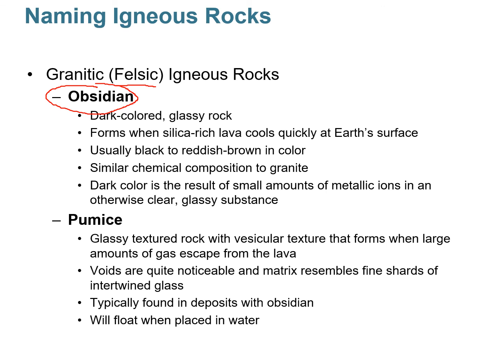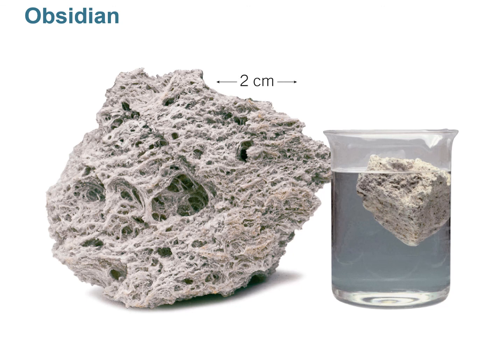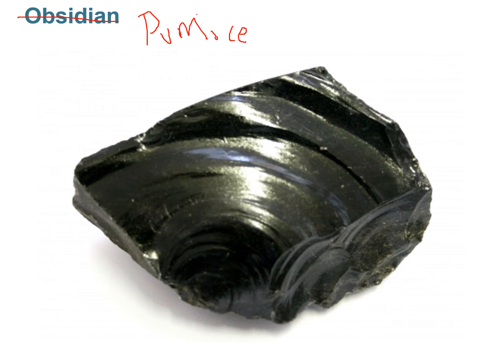Other felsic igneous rocks: obsidian, that glassy dark-colored rock, forms when silica-rich lavas cool quickly at the Earth's surface. Pumice is also a felsic igneous rock but has vesicular texture — those voids are noticeable. Sometimes pumice has fine shards of glass in it, and you often find it deposited with obsidian. Pumice will float in water.